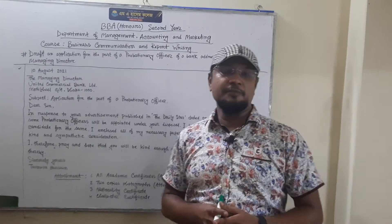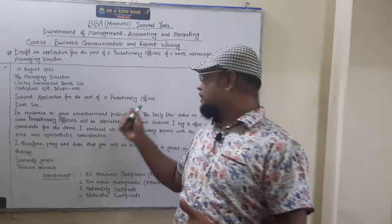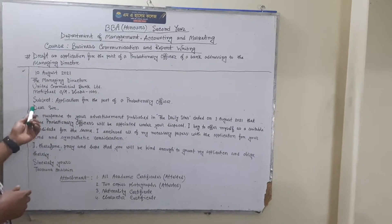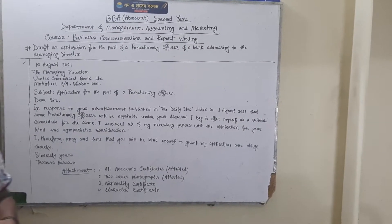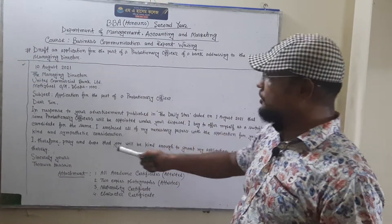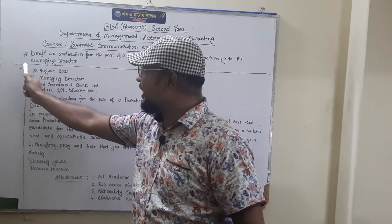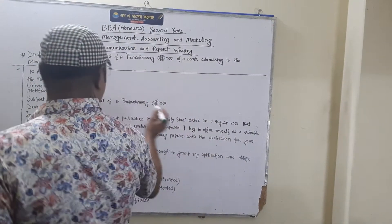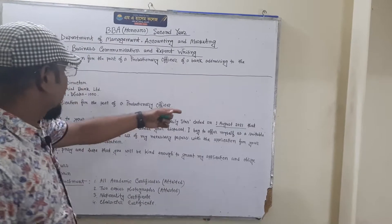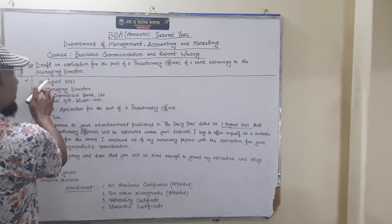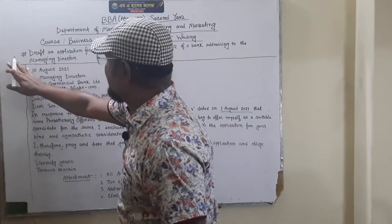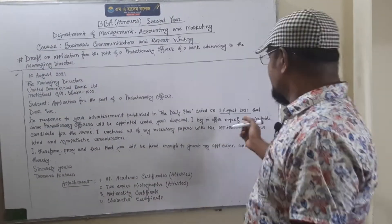Subject: Application for the post of a probationary officer of UCBL. Dear Sir, in response to your advertisement published in the Daily Star, dated 1st August — we should write the exam date. This date, 1st August, should be written as previous to the application date of 10th August.